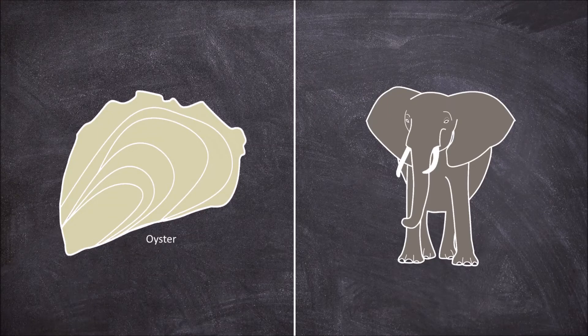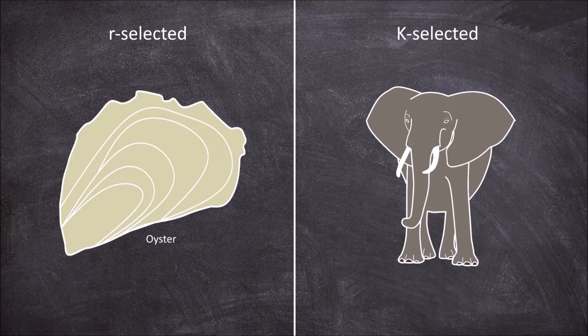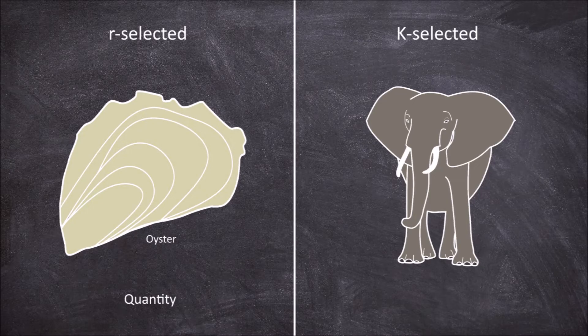In this video we are going to look at the difference between R and K selection. R and K selection refer to two different strategies adopted by species in relation to parental investment and offspring survival. This is the trade-off of quantity versus quality.